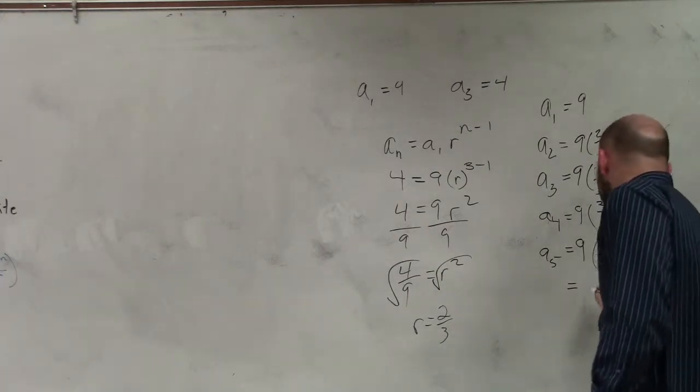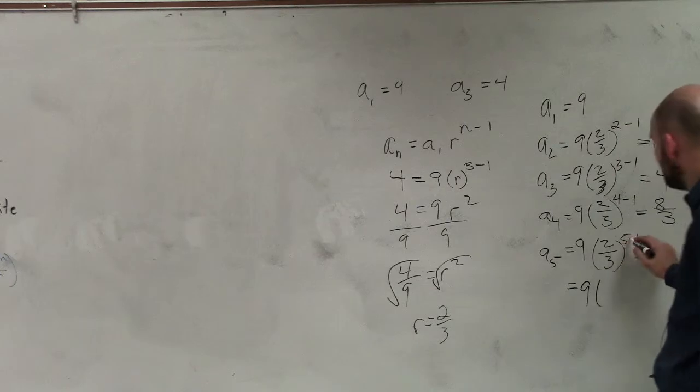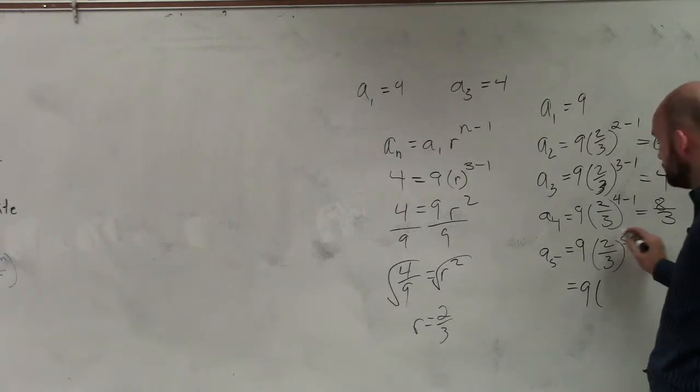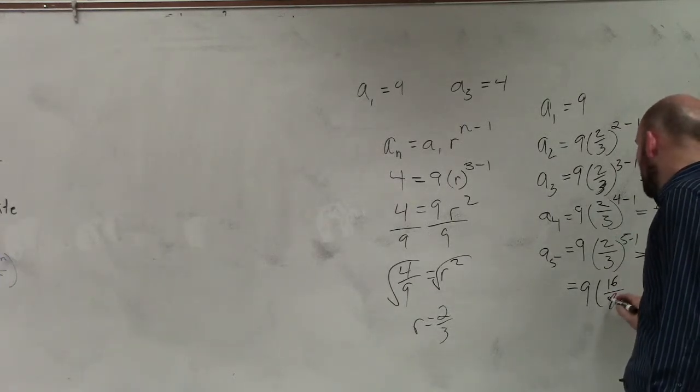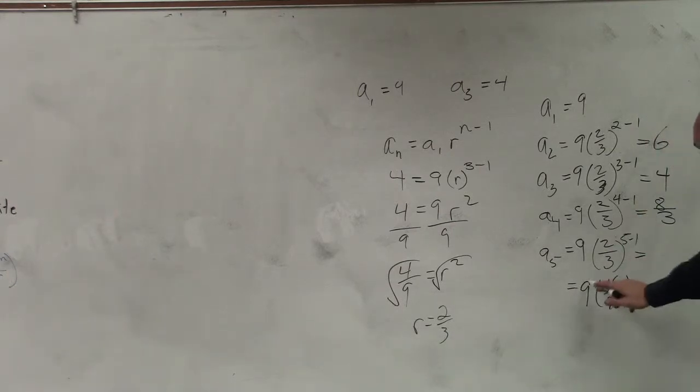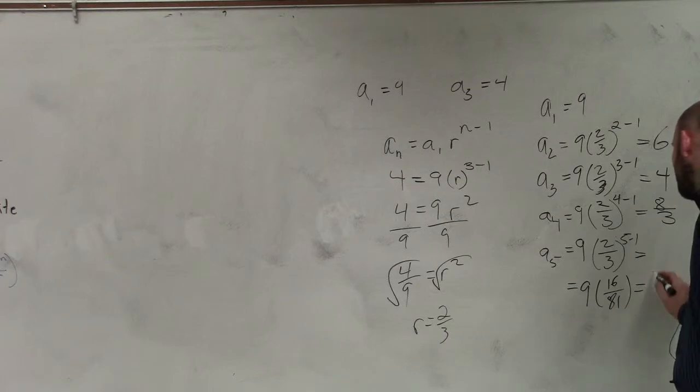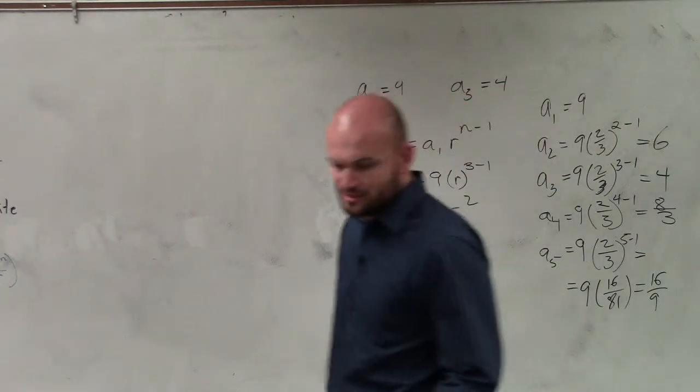So we have 2 to the 4th power is 16 over 81. Let me write this out: 9 times, 5 minus 1 is 4, 2 to the 4th is 16 over 81. You guys see what I did? Then 9 over 81 is 1 ninth. So you have 16 over 9, which we can't reduce. That's our final answer for a sub 5.